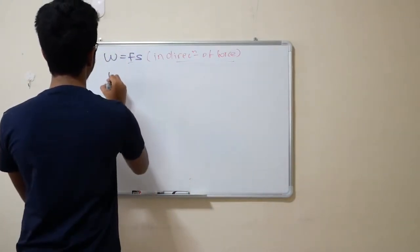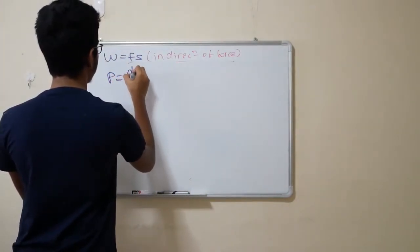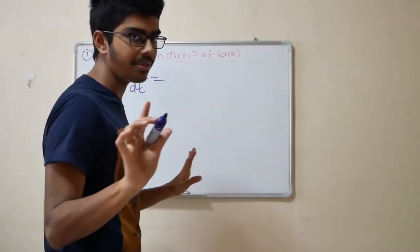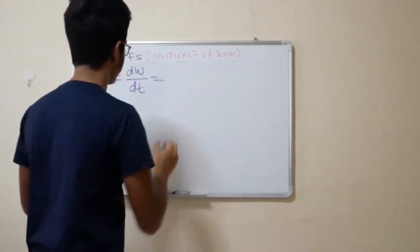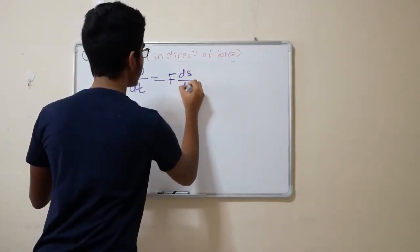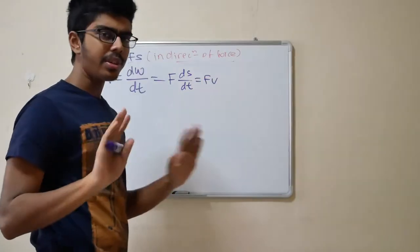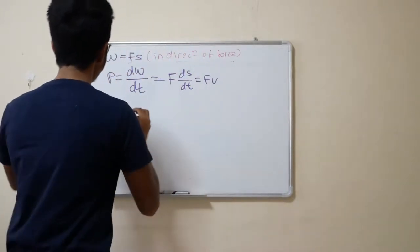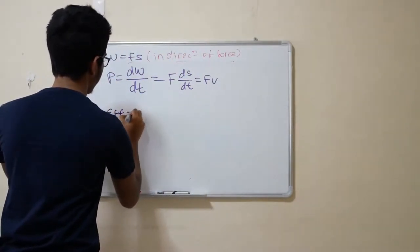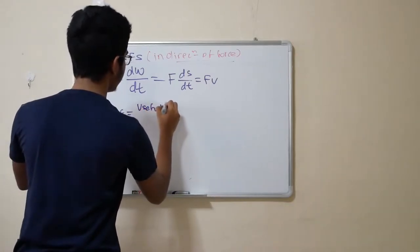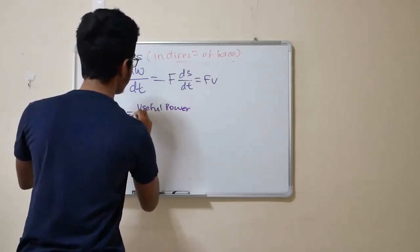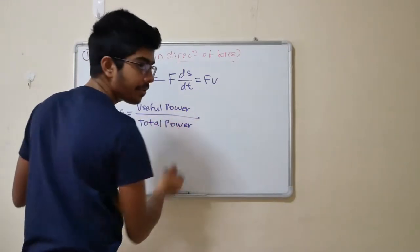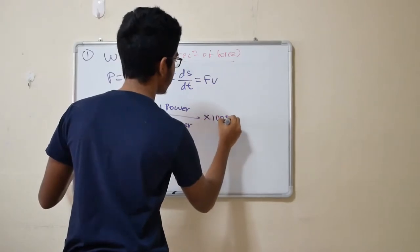Same it applies to power. Power is what? Rate of work done. So it's dW over dt. Some simple differentiation. Assuming it's a constant force. It will be force dS over dt, which is force times velocity. Now the question asks something about efficiency. When you're looking at work energy power efficiency, you call it useful power. It's how much useful power you're able to get from the total power that you have input into the system times 100%.